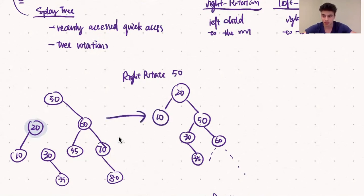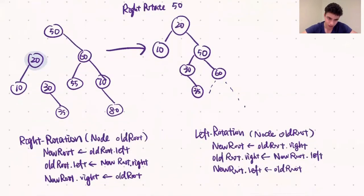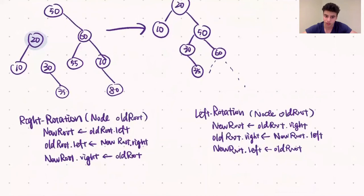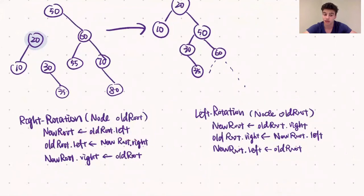This is an example of a right rotation. Now let's take a look at the actual algorithm. The right rotation algorithm works exactly as we did in the example. First we're going to break off the left subtree of our current root — we call this the new root. We're then going to set the left child of the old root to be the new root's right child, and we make the new root the root by setting its right child to be the old root.